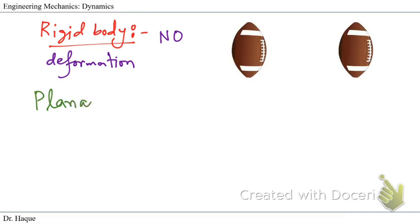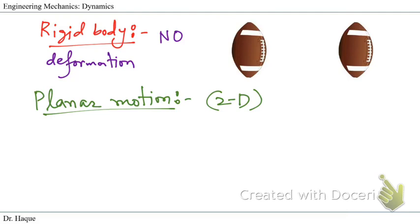Now let's talk about what we mean by planar motion. Planar motion is all about two-dimensional, 2D planar motion. In planar motion, all the particles of a rigid body — which cannot deform — move along paths that are equidistant from a fixed plane. There are three types of planar motion, and we're going to see some examples of those.